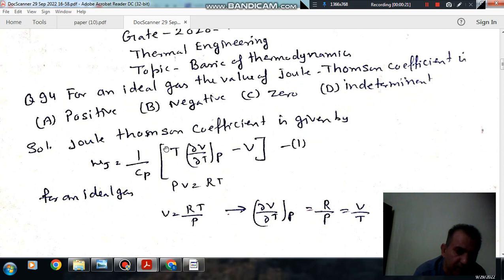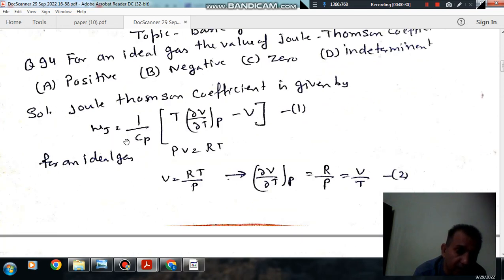1 by Cp times T bracket (∂V/∂T)_P minus V. For an ideal gas...